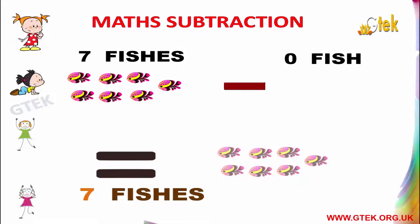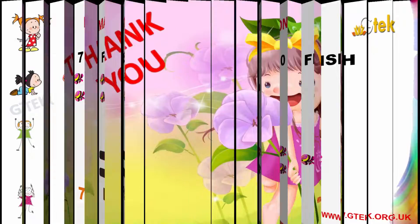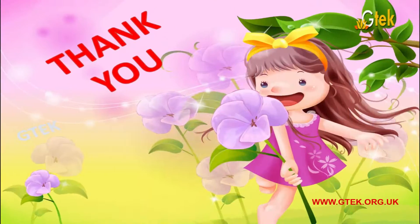7 fishes minus 0 fish equals to 7 fishes. Thank you for watching this from GTech family.